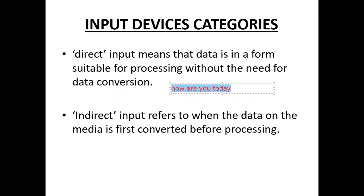To summarize: direct input means the data is already presented in a form suitable for processing without the need for data conversion. Indirect input means the data first has to be converted into a form acceptable to the computer — a form the computer will understand — and then processing takes place.